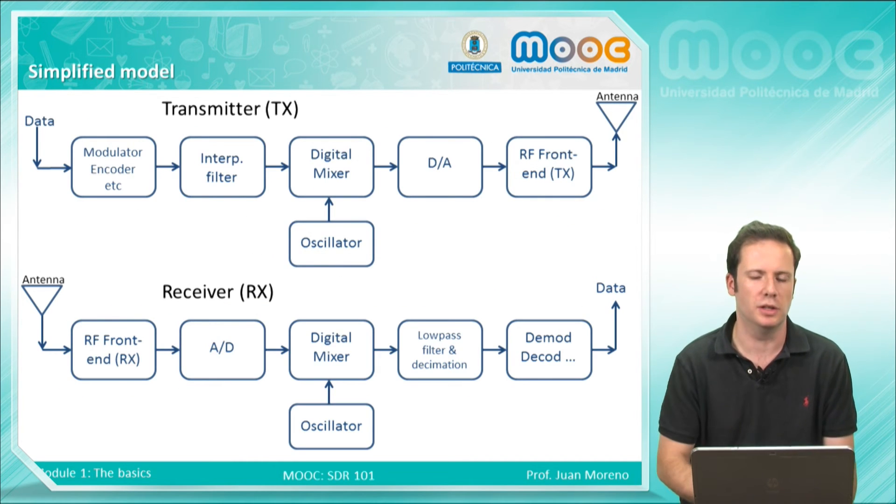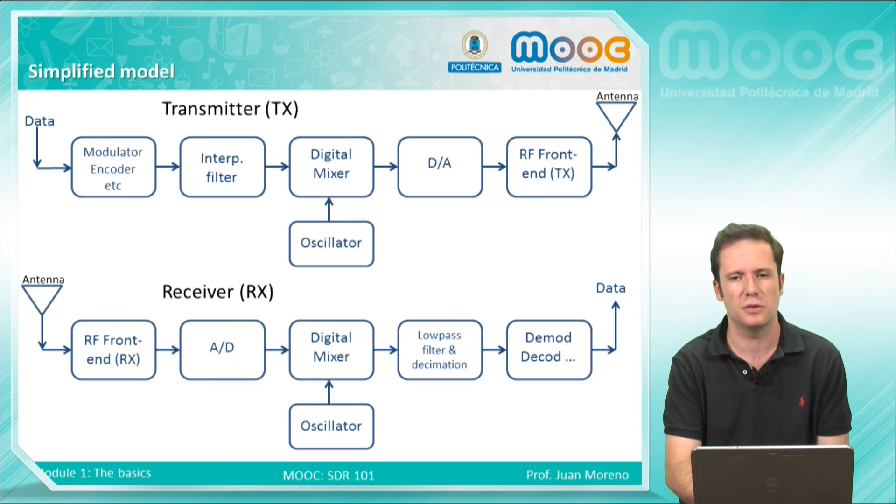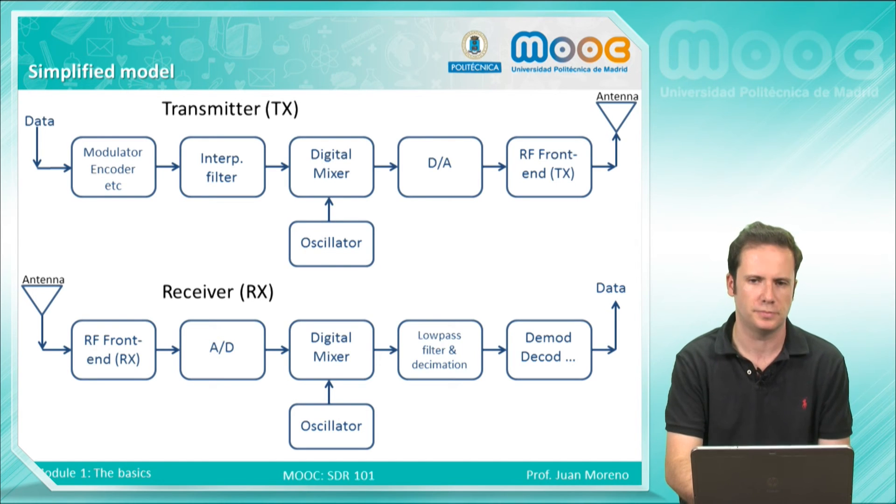This is the simplified model. This is the model which we will work with in this course. In the transmitter part, in the upper part of the diagram, you have an input which is the data. The first subsystem is the modulator, the encoder, and so on. The second part is the interpolation filter. The third one is the digital mixer with an oscillator - here we will change the frequency of the signal. The fourth part is the converter from digital to analog, and finally the radio frequency front end and always the antenna. This is the scheme of the general architecture of a transmitter.